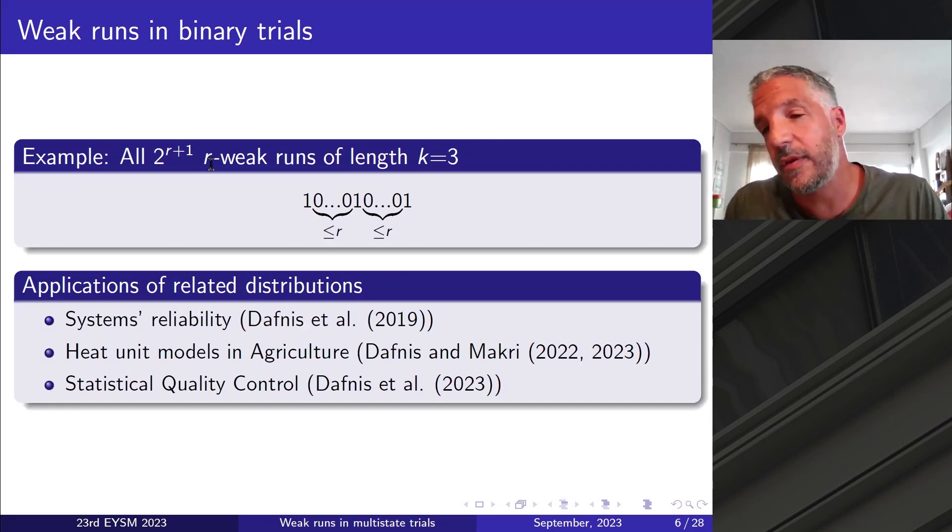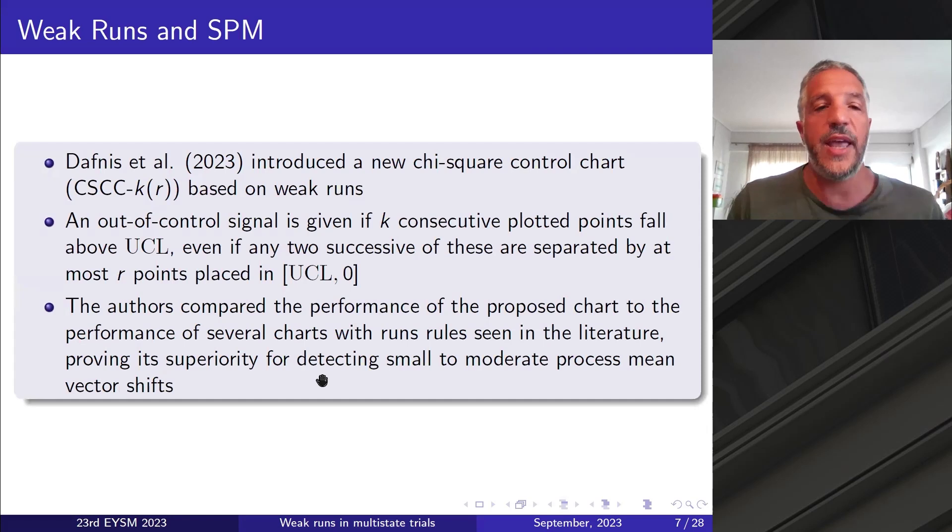So why weak runs? Because as applications become more complex, then our theoretical tools have to be more flexible as well. So we had to incorporate the extra parameter r to the theory of runs that was studied before. Where do we apply such tools? We've applied that in systems reliability in our work in 2019, Dafnis, Makri and Philippou. In agriculture, you can see some work of ours. And very recently, in statistical quality control, and more specifically, in statistical process monitoring. So in the work of Dafnis, Perdikis and Papadopoulos' very recent work, which was published in Communications in Statistics Theory and Methods, we introduced a new chi-square control chart based on weak runs.